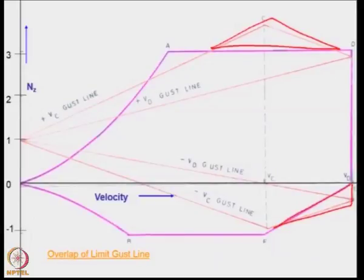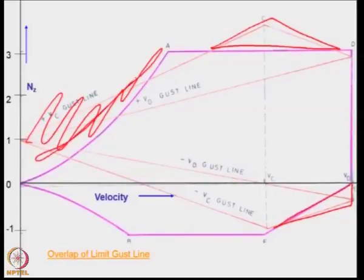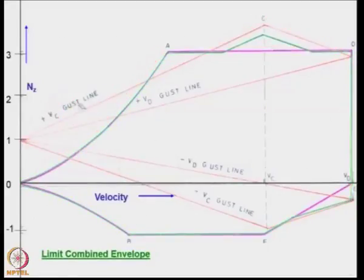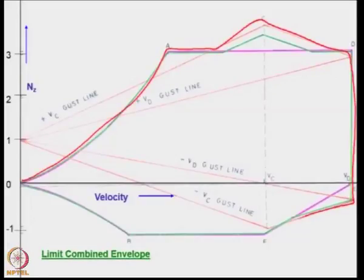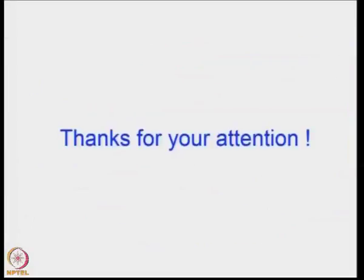In other words, this area you cannot fly because it falls below the stall. If you now look at the combined envelope, it will actually follow the outer contour of the VN diagram and you will get the limit combined envelope. Thanks for your attention.